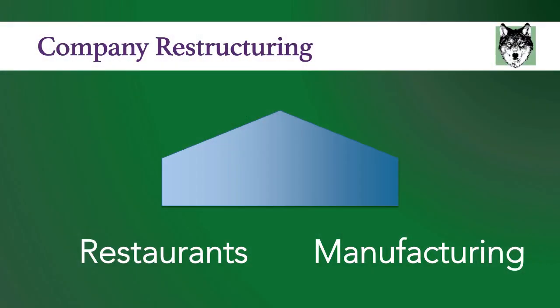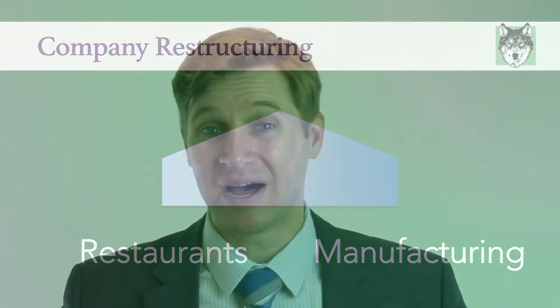The first example I want to talk about of financial engineering is restructuring a company. Imagine you have a company with two departments: one department operates a chain of restaurants, and the second department manufactures washing machines. These are two very different types of businesses, but they're together underneath the same business umbrella. There are a lot of different reasons why a business could develop this way — it could have developed organically, or it could be the result of two businesses being combined in the past. What exists today in this example is these two very distinct businesses combined within one overall business.